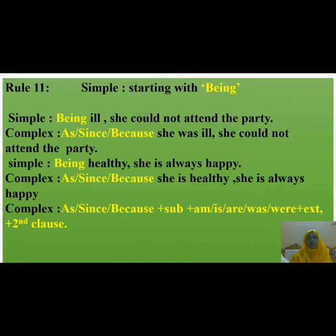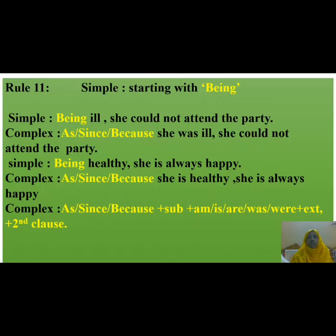Sometimes you will find sentences that start with 'being'. Look at the example: 'Being ill, she could not attend the party.' The complex form will be — using 'as', 'since', or 'because' (you can choose any one of these subordinating conjunctions): 'As/Since/Because she was ill, she could not attend the party.' Here the phrase 'being ill' has been turned into a clause by adding a subordinating conjunction, then a subject, then a finite verb, and then the extension. The second clause remains unchanged.